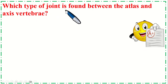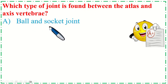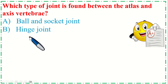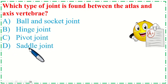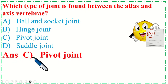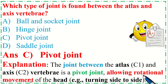Which type of joint is found between the atlas and axis vertebra? Option A: Ball and socket joint, B: Hinge joint, C: Pivot joint, and Option D: Saddle joint. The correct option is C, Pivot joint. The joint between the atlas (C1) and axis (C2) vertebra is a pivot joint allowing rotational movement of the head, for example turning side to side.